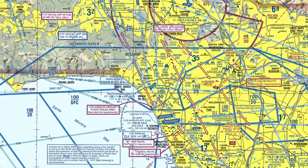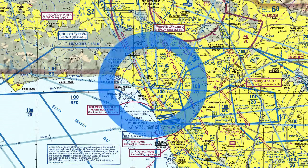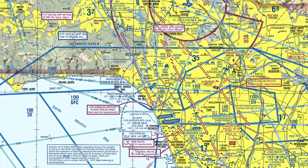Let's do one more example — Santa Monica Airport. Santa Monica is a Class Delta airport going from the surface up to 2,700 feet MSL. Above that, Class Bravo airspace starts at 5,000 feet MSL going up to 10,000 feet MSL. But in the middle, between 2,700 feet and 5,000 feet, we have Class Echo airspace filling in the gap.